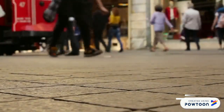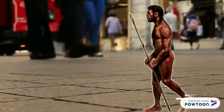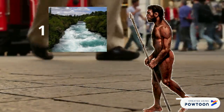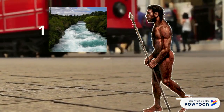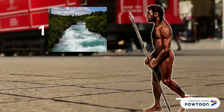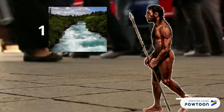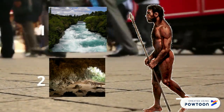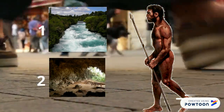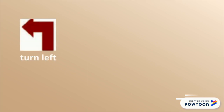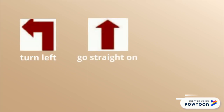He asks for some help. First, he has to go to the river to drink some water, and second, he has to go to the cave. He needs to know this: turn left, go straight on, turn right.